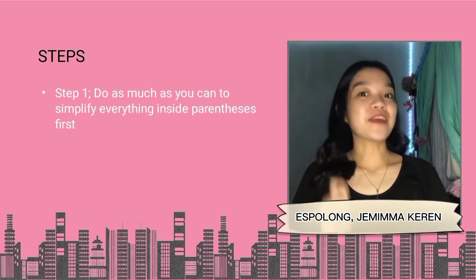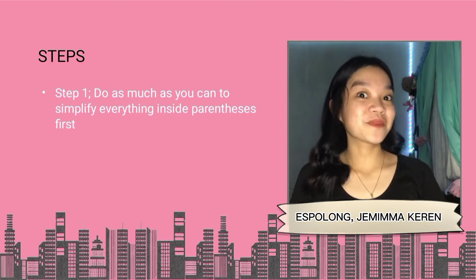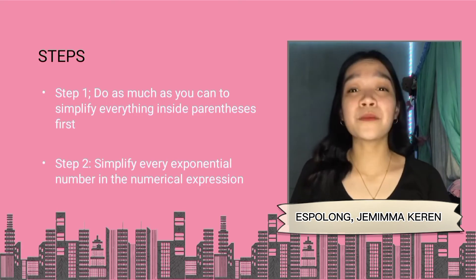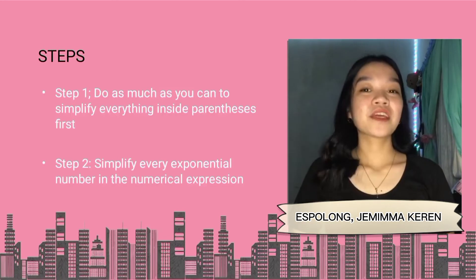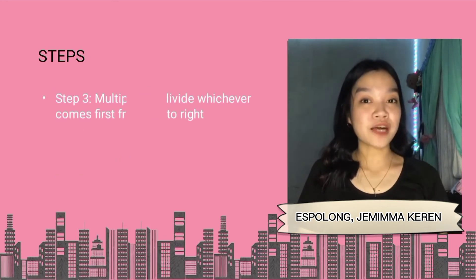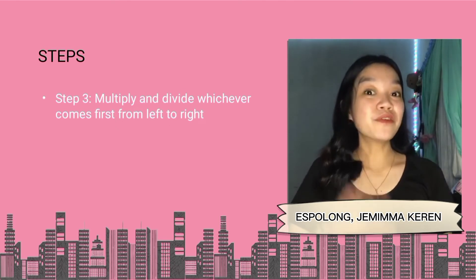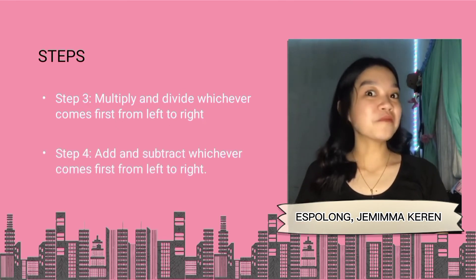The following are the steps to be followed. Step 1: Do as much as you can to simplify everything inside parentheses first. Step 2: Simplify every exponential number in the numerical expression. Step 3: Multiply and divide whichever comes first from left to right. And lastly, step 4: Add and subtract whichever comes first from left to right.